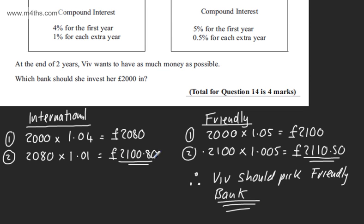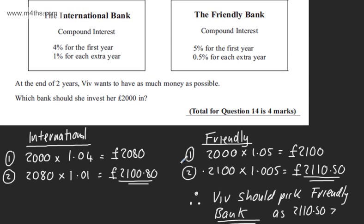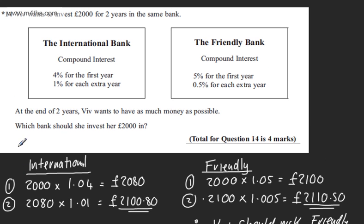I'm just going to write that she should pick the friendly bank based now on my workings. It's clear now what I've done and I've just evaluated. You could say now that this is greater, and if you want to, you could say now, as 2110.50 is greater than 2100.80, or you can just go ahead and find the difference. As long as you have a statement and it's clearly set out, then you'll get the four marks.